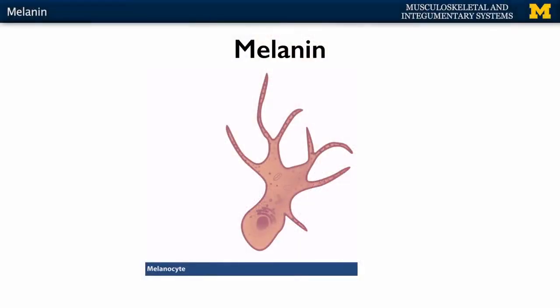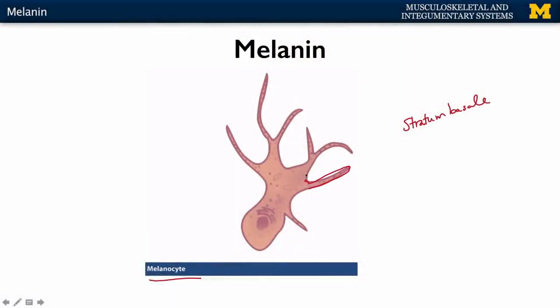We discussed the fact that melanocytes produce a specific pigment referred to as melanin. The melanocyte cell is a fairly distinctive cell, typically found in the stratum basale, which is the deepest layer of your epidermis. Significantly, you have all these processes or extensions of the cell by which that melanin pigment can move in this region and move to the cells closely associated to the melanocyte.